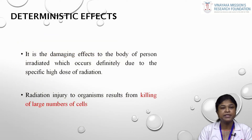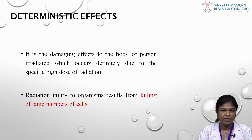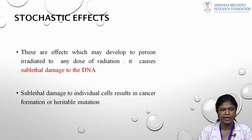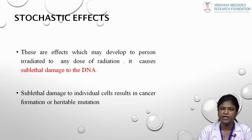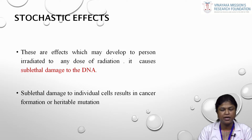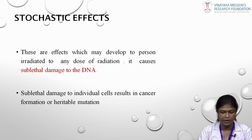Deterministic effect is the damaging effect on a person who is irradiated, which occurs definitely due to a specific high dose of radiation. It leads to the killing of a large number of cells — it is determined to cause death of cells when irradiated. In contrast, stochastic effect does not cause cell death; instead it brings about sublethal damage to the DNA, which may appear later in life or be inherited by offspring, potentially resulting in cancer formation or heritable mutations.